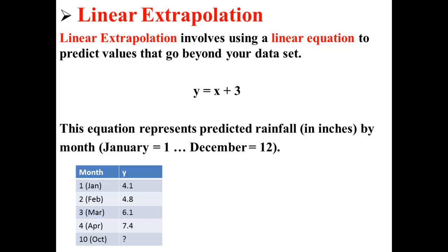So here we have some fake data. In January, we had 4.1 inches of rainfall. February, 4.8. March, 6.1. April, 7.4. And that's all the data we have.